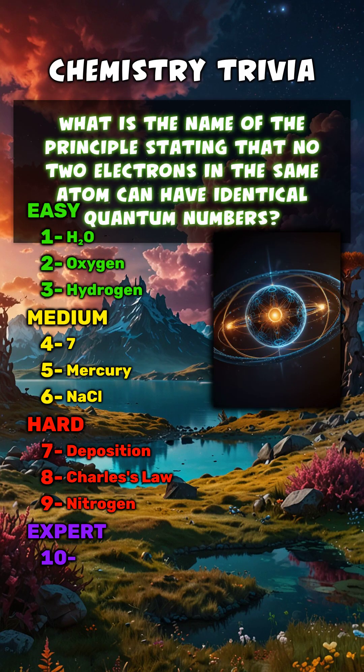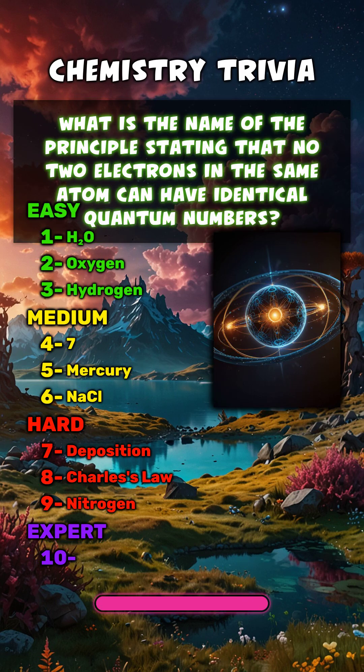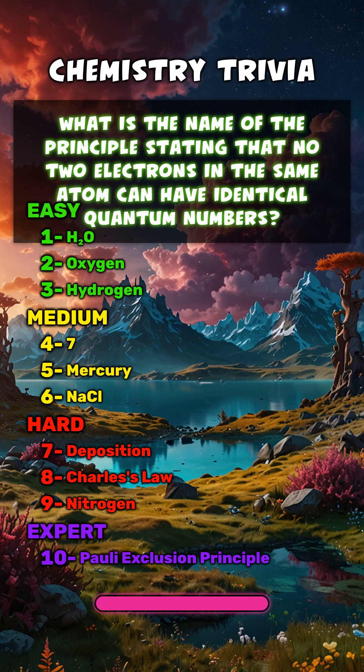What is the name of the principle stating that no two electrons in the same atom can have identical quantum numbers? Pauli exclusion principle.